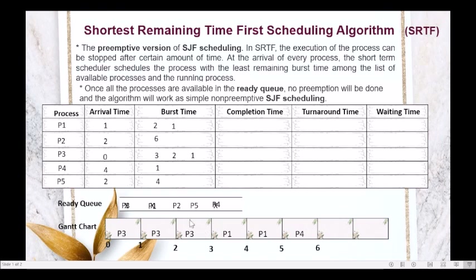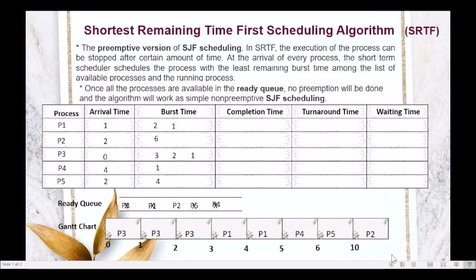Now only P2 and P5 are in the ready queue. P5 has burst time 4 and P2 has burst time 6, so P5 has a smaller burst time. We allocate the CPU to P5, which executes from 6 to 10. Finally, we allocate the CPU to P2, which executes from 10 to 16. Our Gantt chart is now complete — all processes have been executed.